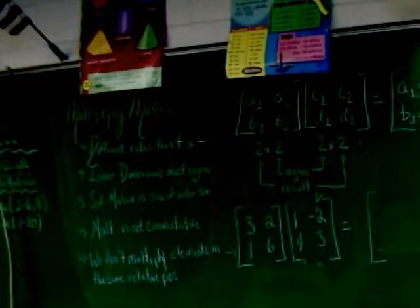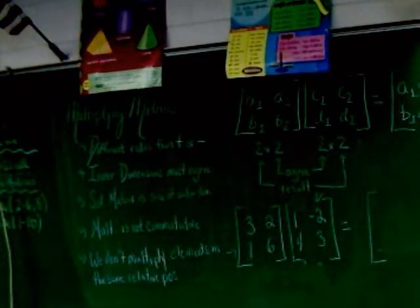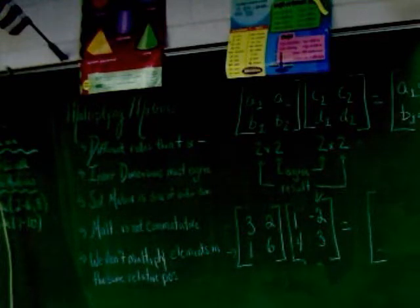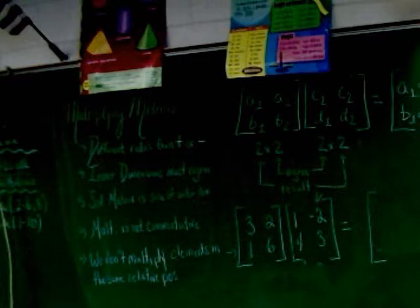Multiplying matrices is not commutative. Remember, we've talked about commutative many times this year. Commutative means it's the same forwards or backwards. That's not true. Like, if I was doing two times three, and I flipped around in three times two, I'd get the same answer. With matrices, that doesn't work. And we do not multiply elements in the same relative position. That's what we don't do.